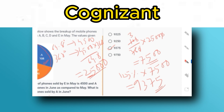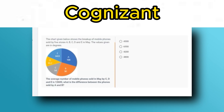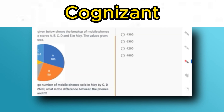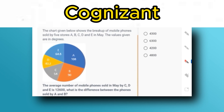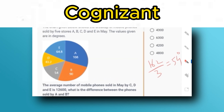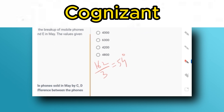The next question: the average number of mobile phones sold in May by C, D, and E is 12,600. What is the difference between the phones sold by A and B? The degrees for C, D, and E are 54, 43.2, and 64.8 respectively. Adding them gives 162°. The average is 162 ÷ 3 = 54°. So 54° corresponds to 12,600 mobiles.